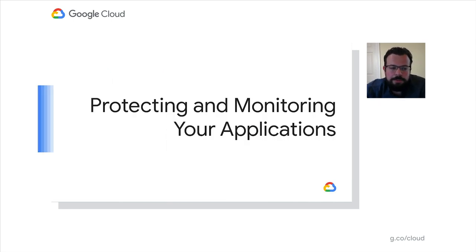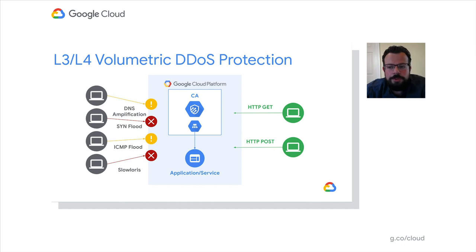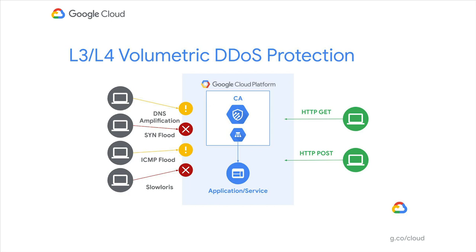To protect your application from volumetric and protocol-based DDoS attacks, all that is necessary is to deploy one of the global load balancers in front of your HTTP or TCP workload. Once fronted by the load balancers, Cloud Armor in conjunction with the LBs will automatically mitigate DDoS attacks like DNS amplification attacks, SYN floods, and other common layer 3 and layer 4 DDoS attacks. The only requests that will be proxied back to your applications are ones that have completed the three-way handshake and are well-formed layer 7 requests.